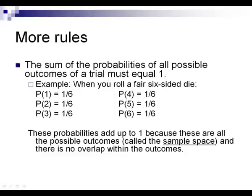For example, let's look at all the different probabilities of the outcomes of rolling a 6-sided die. There's a 1 in 6 chance of rolling a 1, a 1 in 6 chance of rolling a 2, a 1 in 6 chance of rolling a 3, and so on. Notice that if you add up all the probabilities, they add up to 1. These are all the different possible outcomes, called the sample space — when you list out all different possible outcomes. There's no overlap between outcomes, and the sample space makes up 100% of the possible probability.